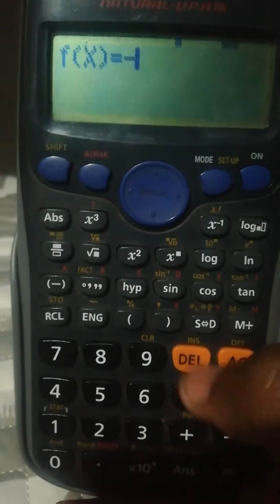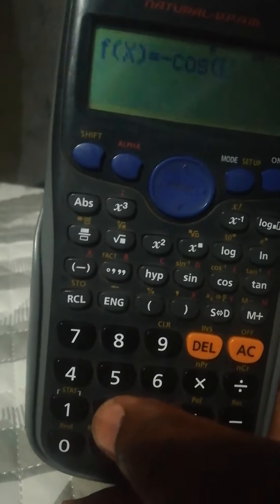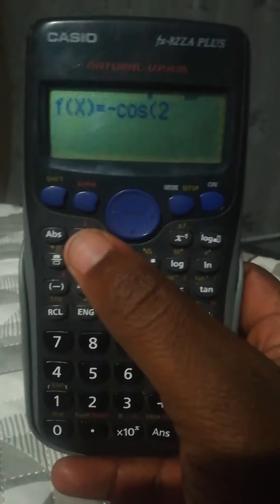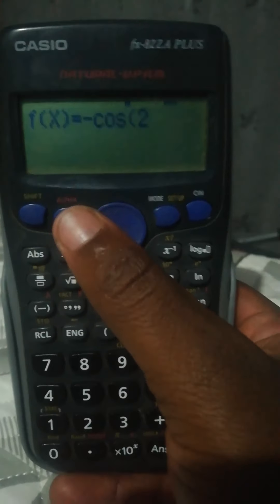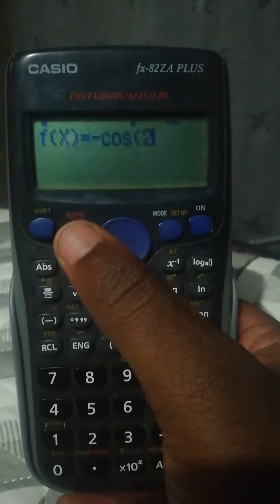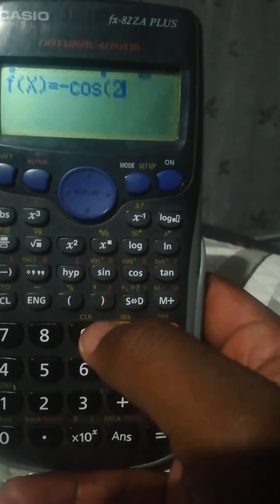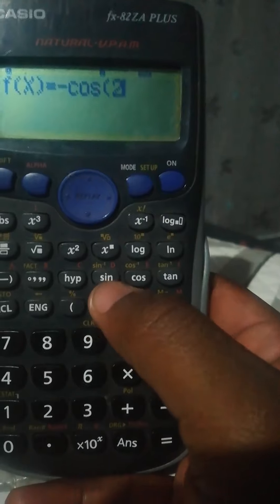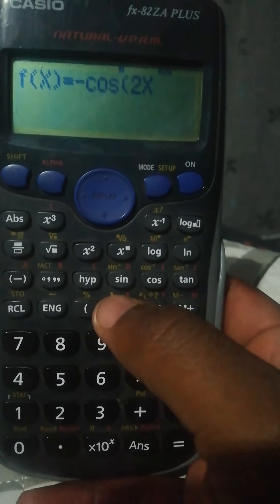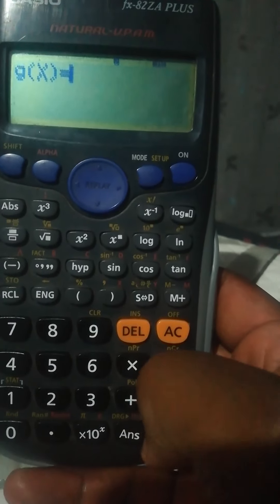So in this case, it's -cos(2x). And then if you want to have x, you press the alphabet button and then you press x. So you press the bracket with x inside.